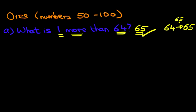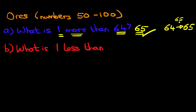Now let's look at the same question, but we're going to make this one less than. What is one less than 64? Let's do this using the counting method as well. What number are we looking at? We're looking at the number 64, so let's write this down: 64. Are we going forwards or backwards? It says less than, so therefore we are going backwards.